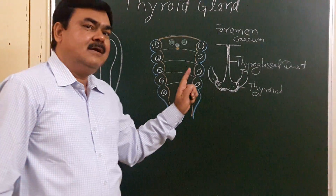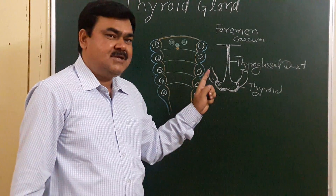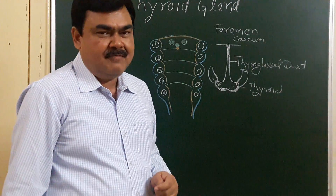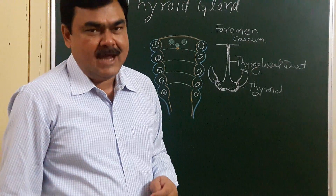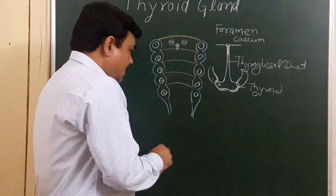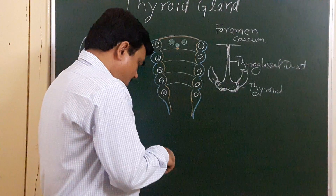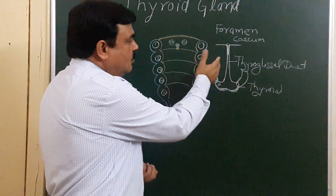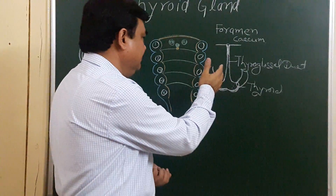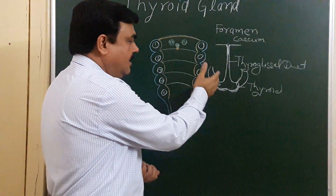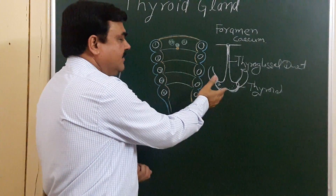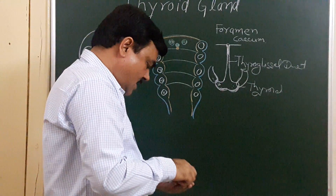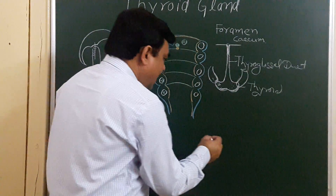The thyroid gland starts functioning around the eleventh week of intrauterine life. This is how the thyroglossal duct forms, descends, and ultimately the thyroid gland is formed.